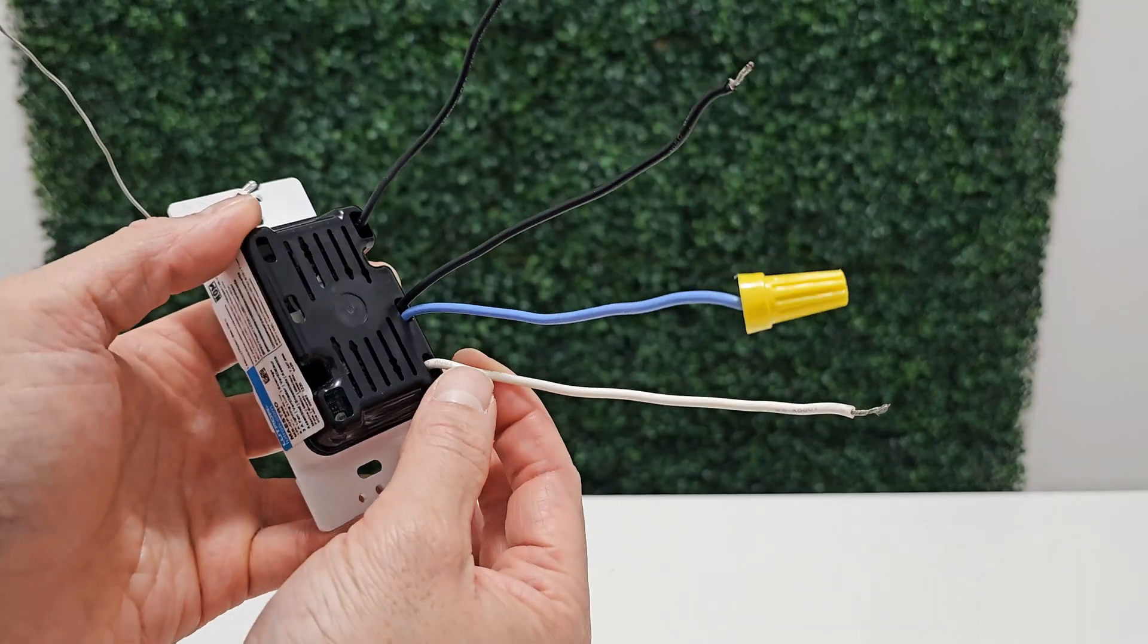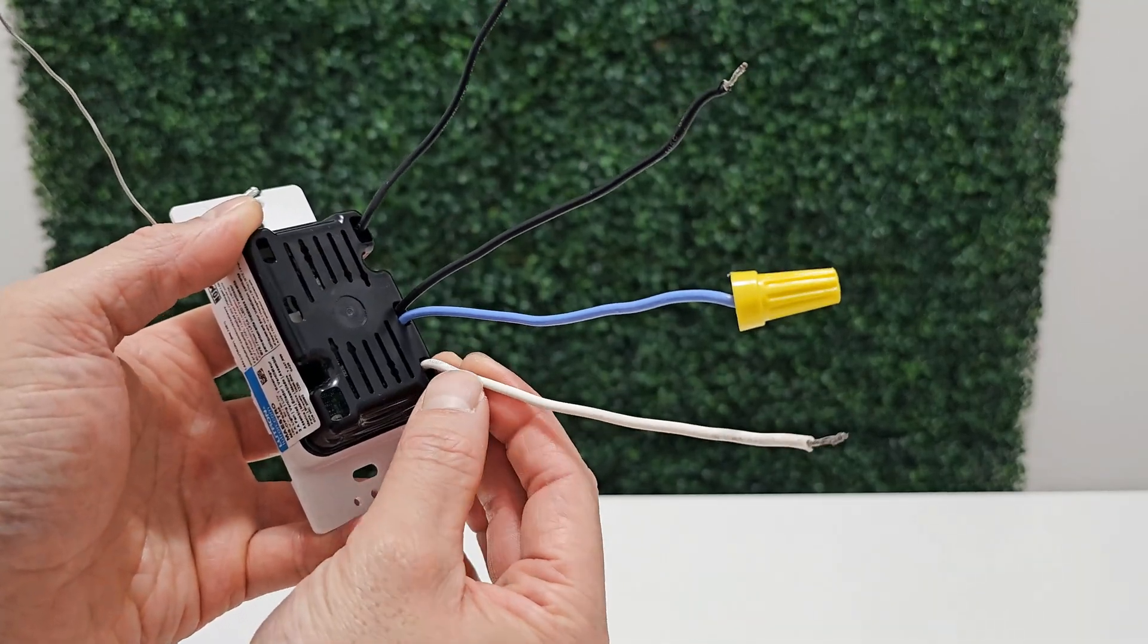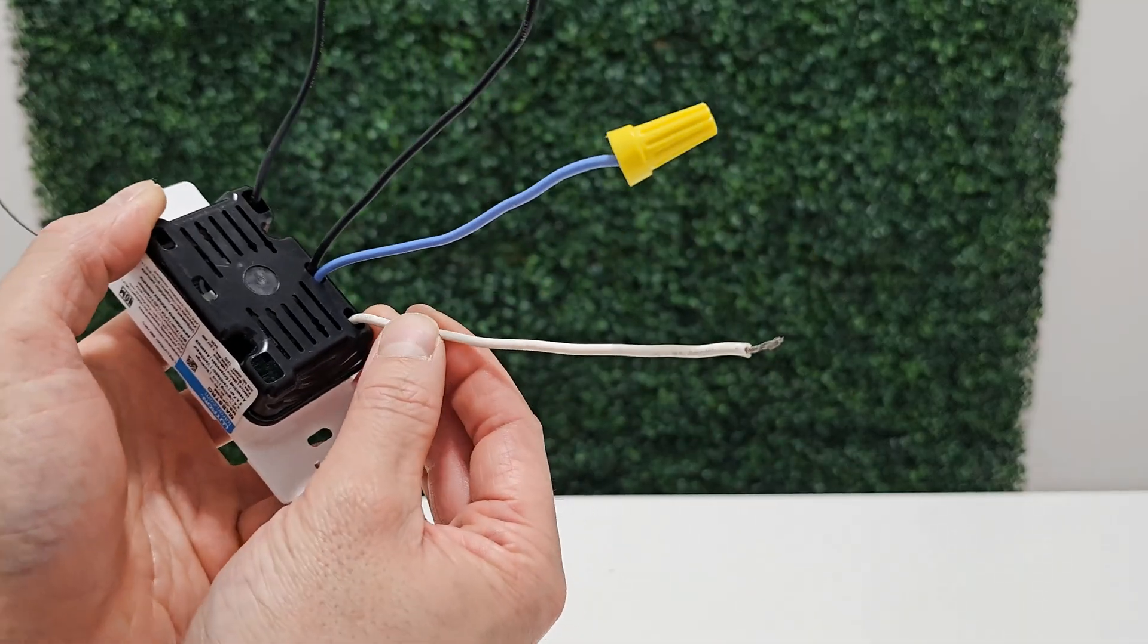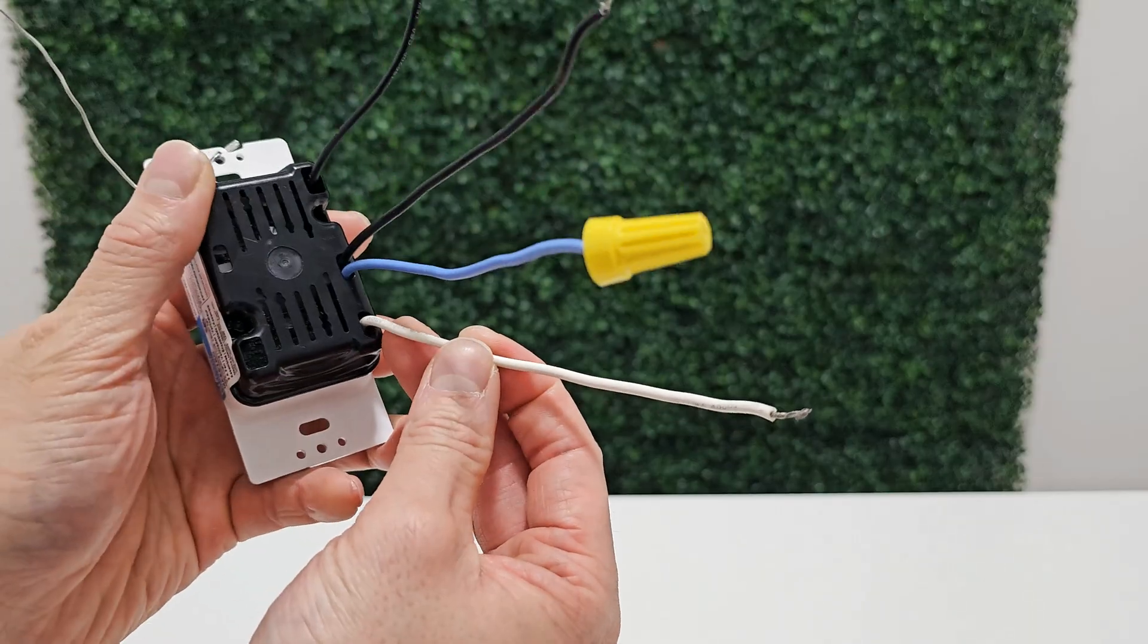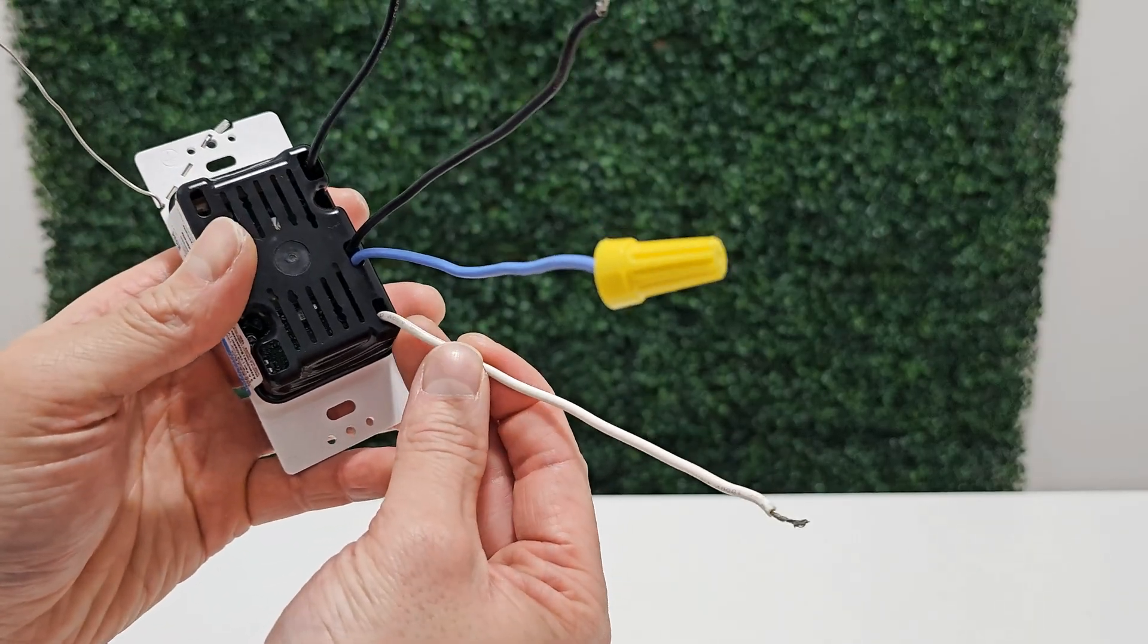Originally this white wire here had a removable green sleeve. I took it off. The manufacturer has their own electrical code. They use this same wire for two purposes, for neutral and ground.